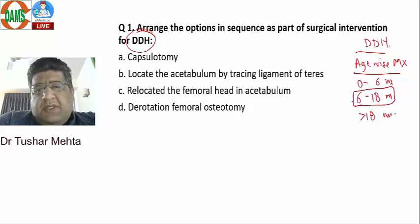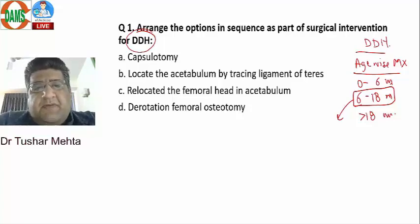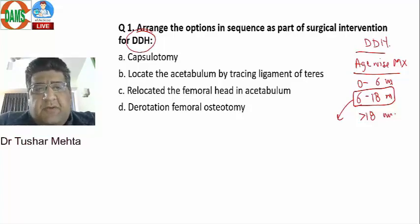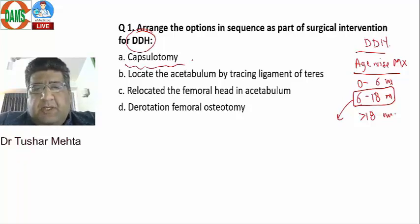In the older age group, surgical reduction becomes very difficult. The first step is to expose the area, which is done by performing a capsulotomy. Once you open the capsule, you enter inside the hip joint.